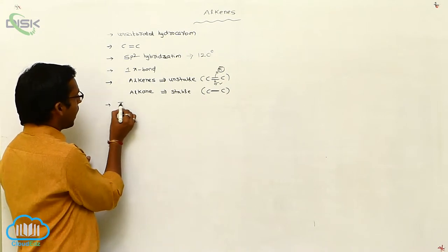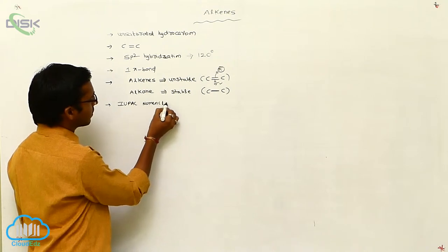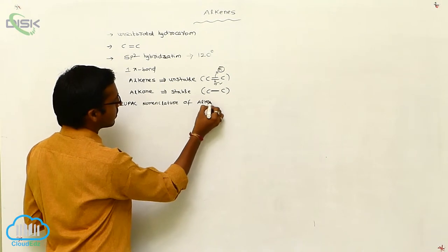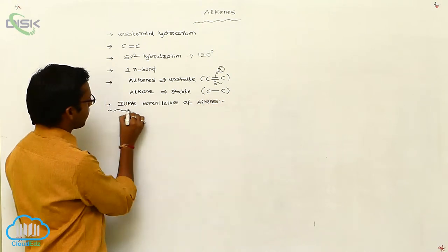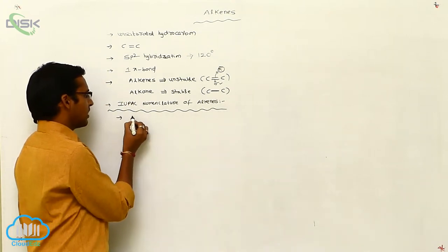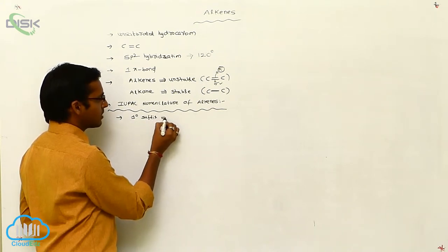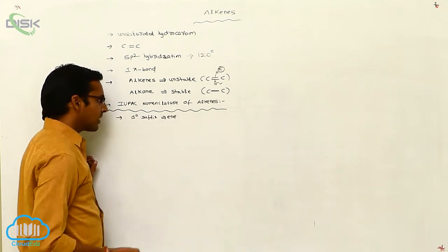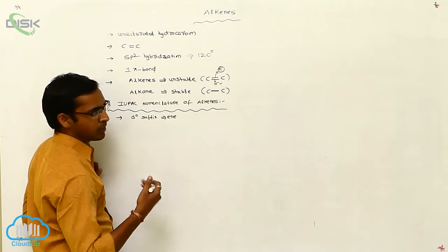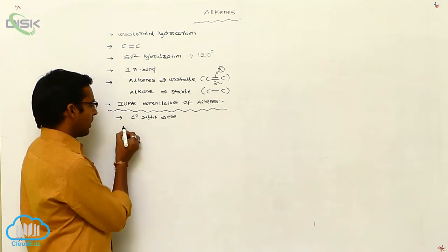Now, the IUPAC nomenclature of alkenes. Generally for alkenes, the primary suffix is '-ene', and the root word depends upon the parent carbon chain — meth, eth, prop, and so on.